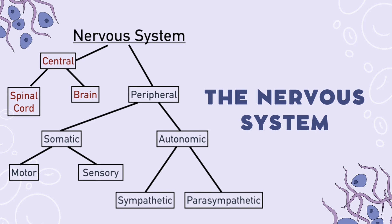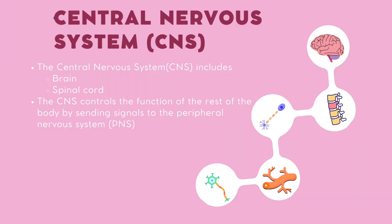Now let's get into the first topic: the nervous system. The nervous system is split into two categories — the central nervous system and the peripheral nervous system. Starting off with the central nervous system, or CNS, which consists of your brain and spinal cord. The CNS controls the function of the rest of the body by sending signals to the peripheral nervous system.